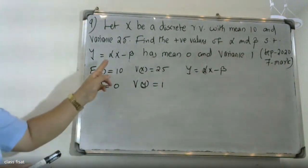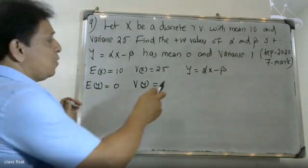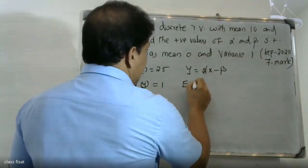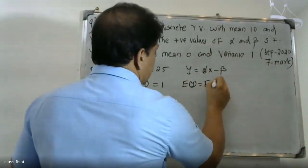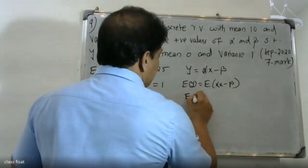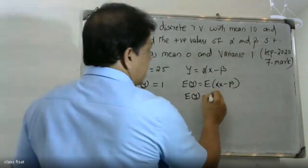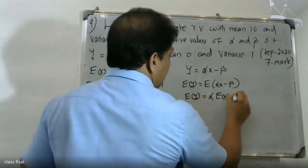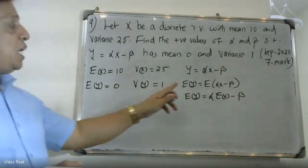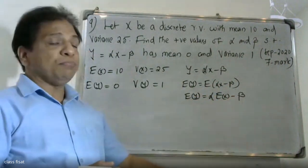Now, if we are given alpha and beta as positive values, we have the relation Y equals alpha X minus beta. Taking expectation of both sides, expectation of Y equals expectation of alpha X minus beta. By the property of expectation, this can be written as alpha into expectation of X minus beta.